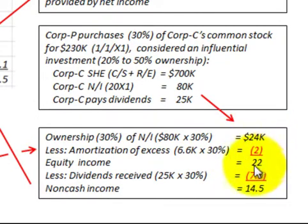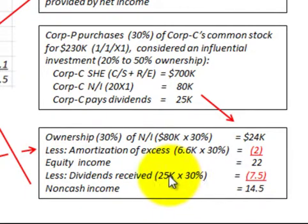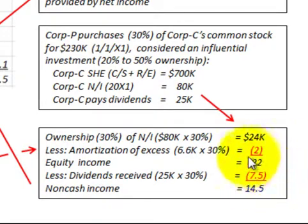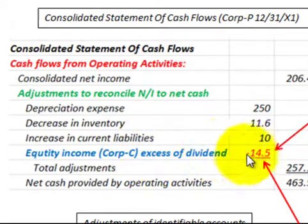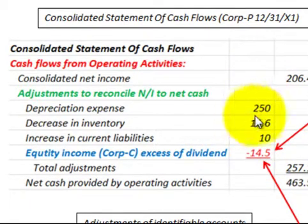Now we subtract the dividends received. Corporation C paid a $25,000 dividend for the year, and corporation P receives 30 percent of that, which equals $7,500. Subtracting the $7,500 dividends received from the $22,000 equity income gives us non-cash income of $14,500. This $14,500 must be subtracted from the consolidated net income on the cash flow statement to reconcile net income to a net cash basis.